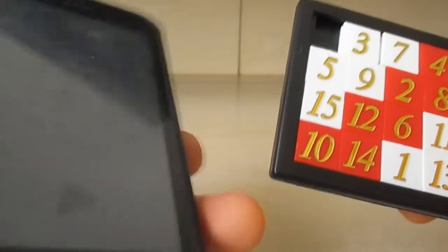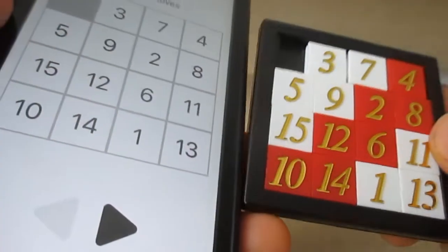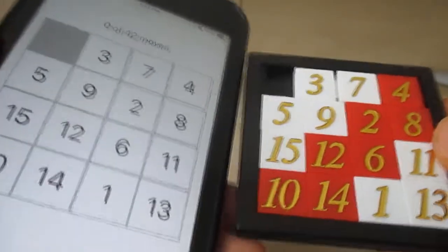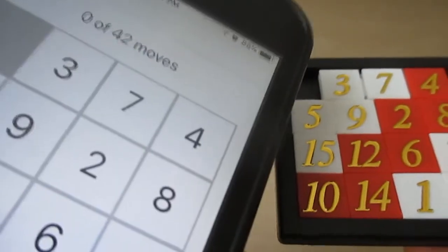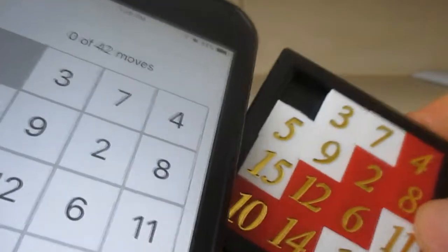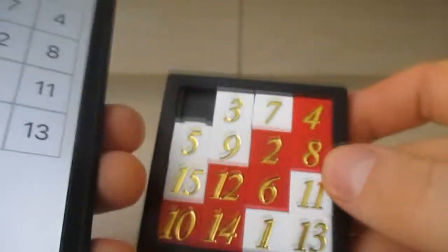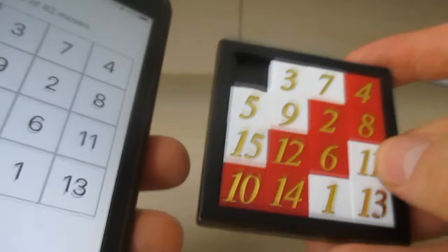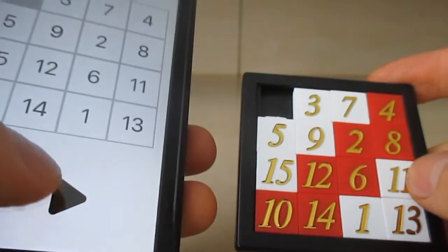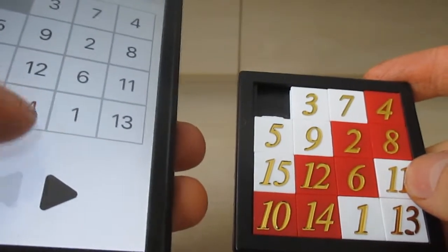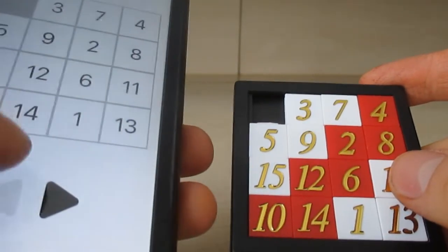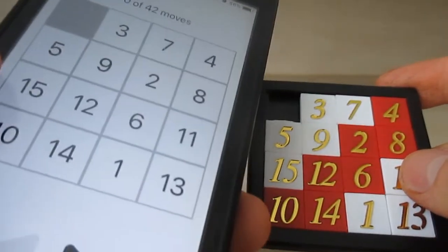Alright, there it is. So I'm just going to... yep, 42 moves. The number may vary on how many moves you can do, but depends on how you rearrange the numbers. All you have to do is just tap this arrow or triangle and just follow along with wherever it's telling you to move the squares.